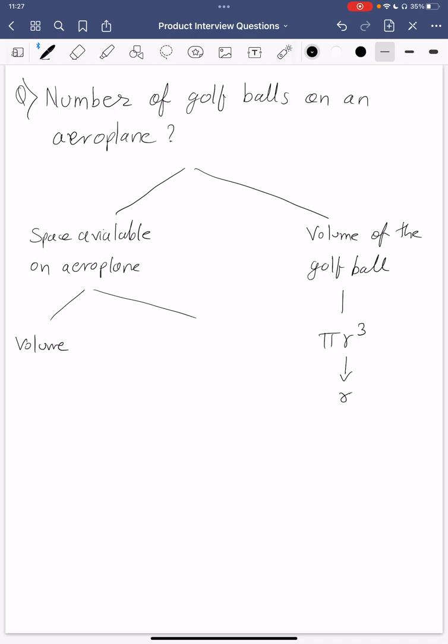So volume of aeroplane minus space occupied by stuff. Volume of aeroplane I think is πr²h with r being obviously we can find what r is and considering if the aeroplane is 747 we can find what r is and what h is. So we just need r and h for the aeroplane.